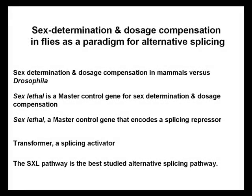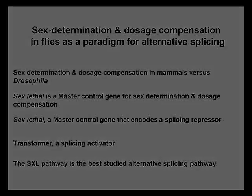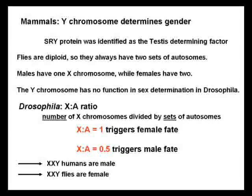Sex lethal is a master control gene that encodes a splicing repressor. It is responsible for sex determination and dosage compensation of the X chromosome. Transformer is a splicing activator. In mammals, the SRY protein was identified as the testes determining factor. Flies are diploid and so they always have two sets of autosomes.